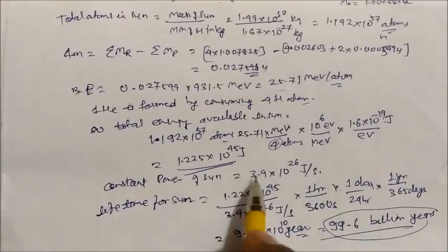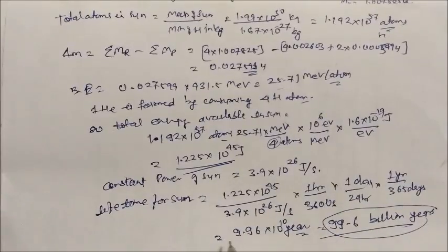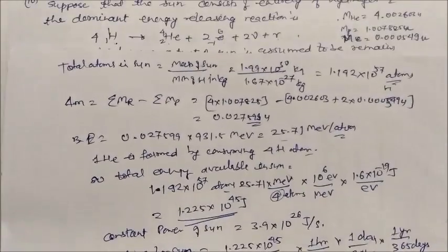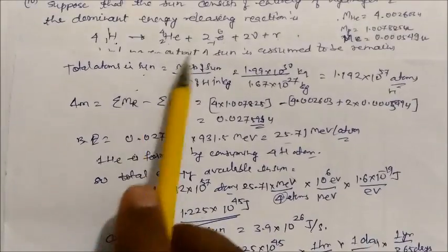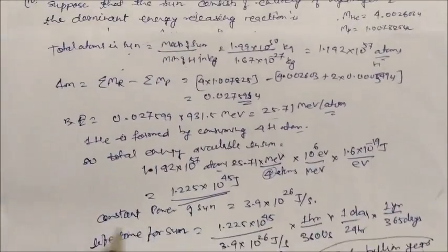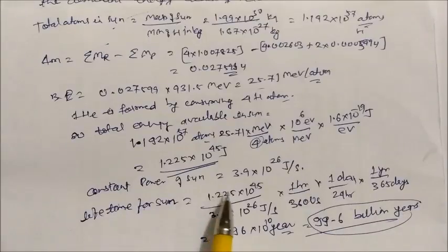So the sun will continuously give power to the Earth at this constant rate for approximately 99.6 billion years, burning all hydrogen into helium over this entire duration.